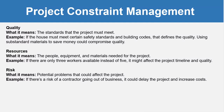Quality means the standards that the project must meet. If the house must meet certain safety standards and building codes, that defines the quality — using substandard materials to save money could compromise quality. Resources means the people, equipment, and materials needed for the project; if there are only three workers available instead of five, it might affect the project timeline and quality.